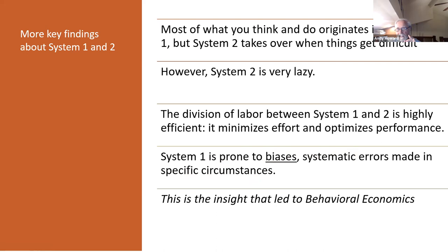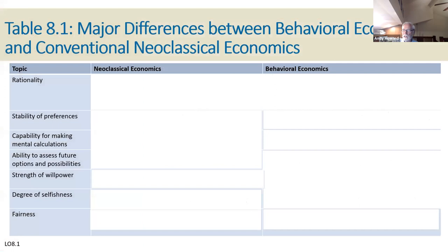Traditional economics believed that people were rational — they were thinking about things when they made their decisions. We found, though, that because System 1 is so dominant, people make systematic mistakes. This chart was taken from your text, and if you understand the divisions here, it's going to really help you understand the chapter quite well.